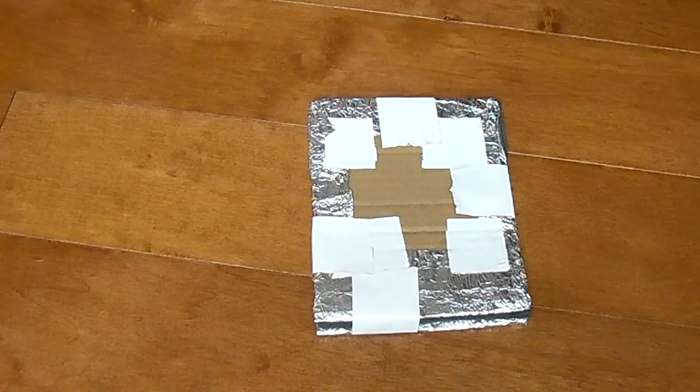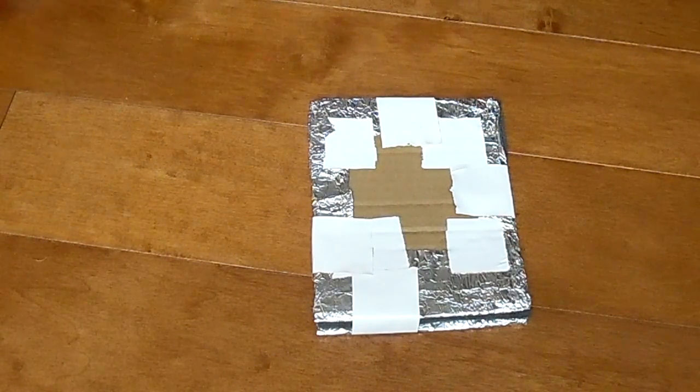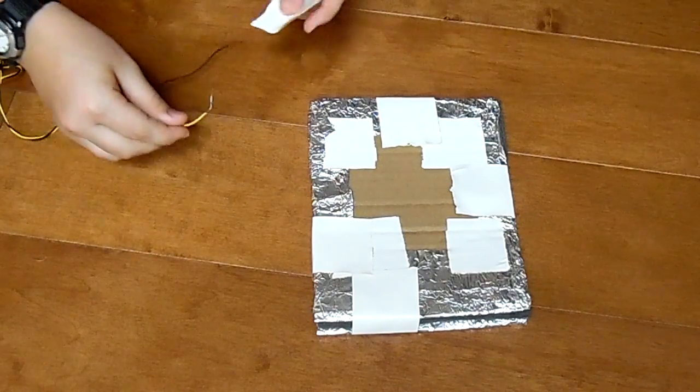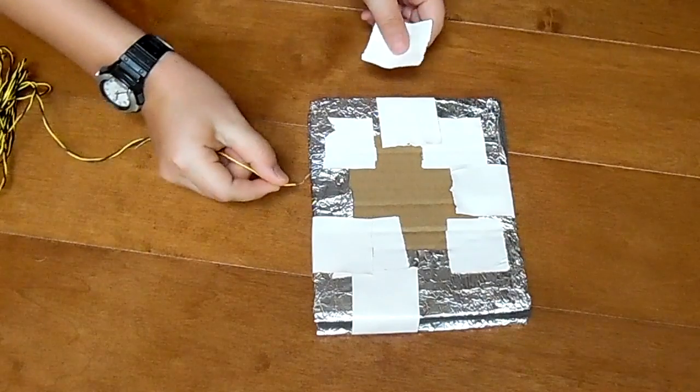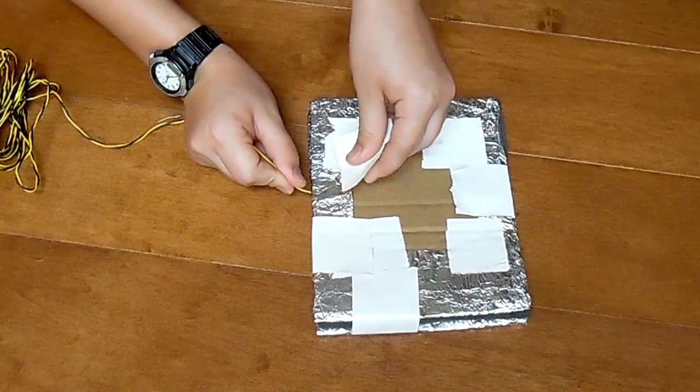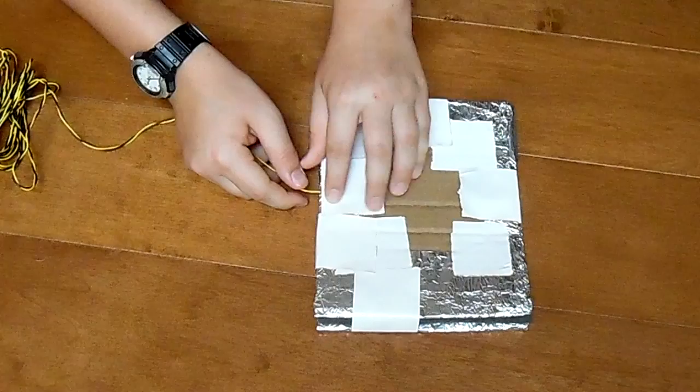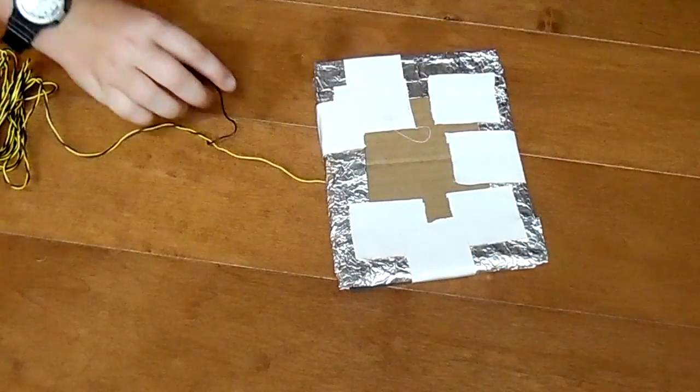Then, take the wires from the electronics part of the build and tape one to the top sheet of foil and one to the bottom sheet of foil.